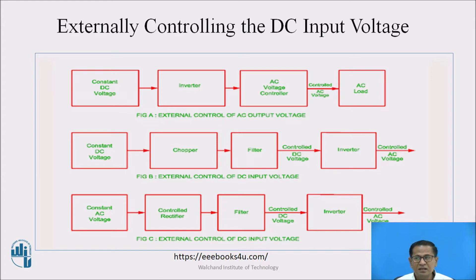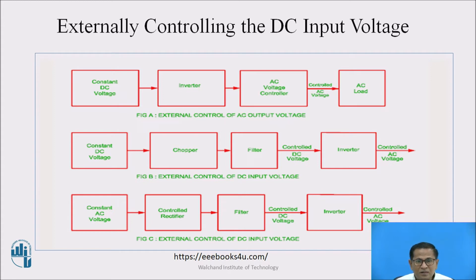Externally controlling the DC input voltage — refer to figure A. In figure A, the output of the battery is connected to the input of the inverter, and the inverter is connected to the AC voltage controller, which produces the controlled AC voltage. To obtain controlled AC voltage, vary the firing angle of the AC voltage controller. As the firing angle changes, the AC voltage controller output changes, and it is possible to control the AC voltage.